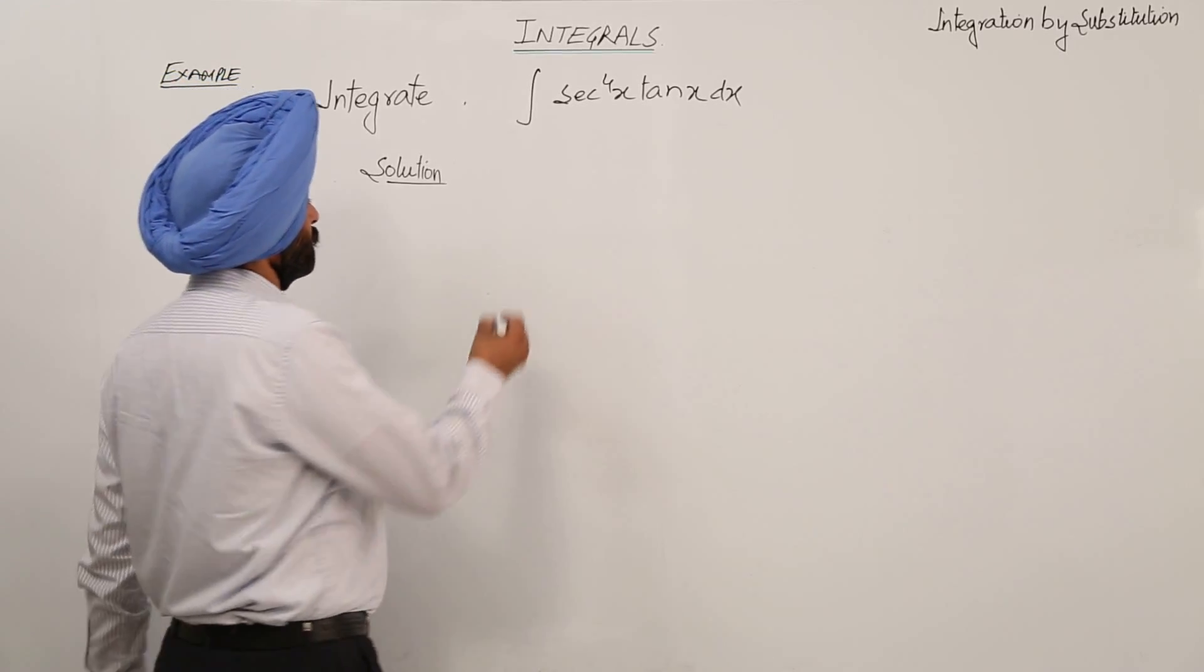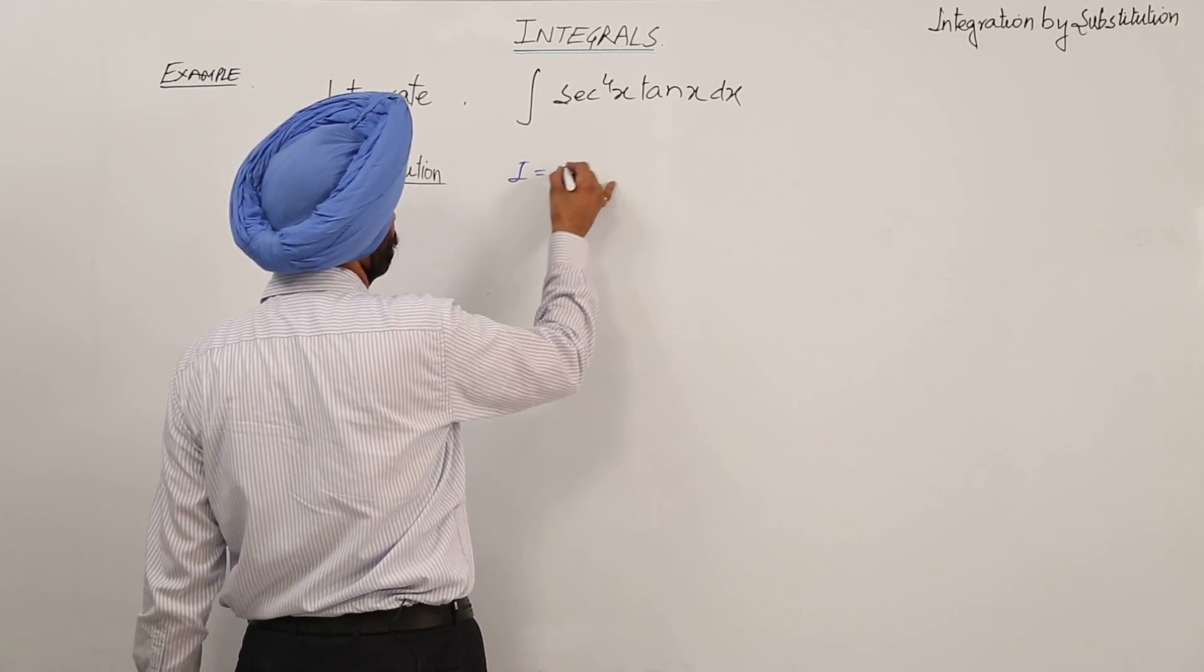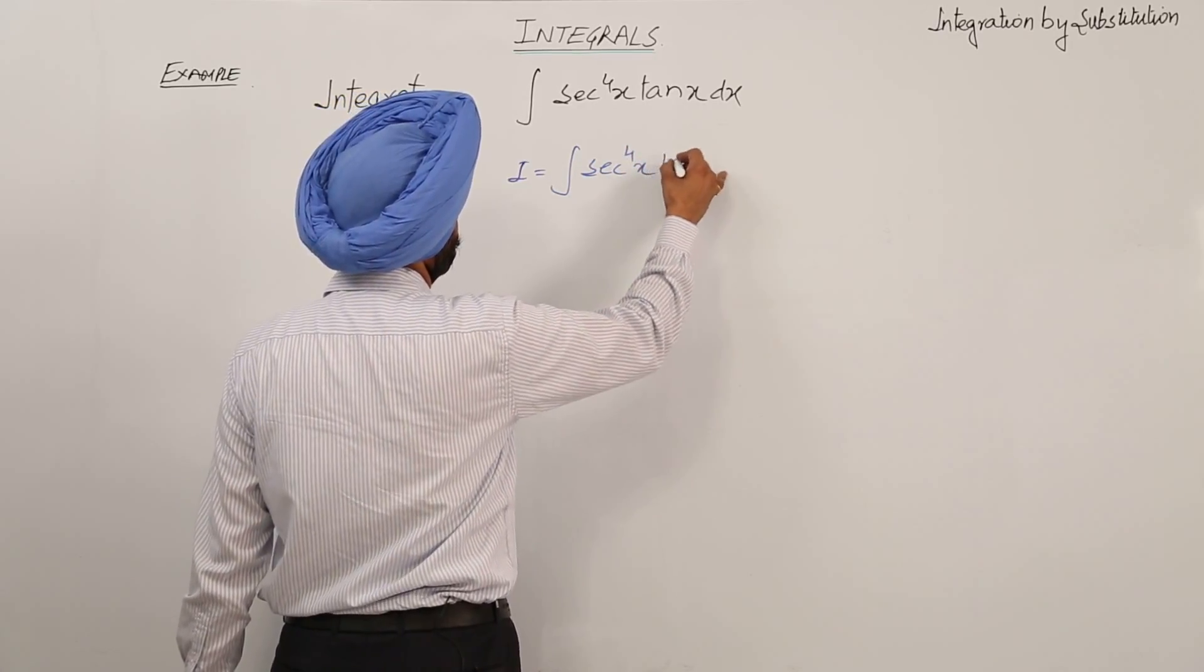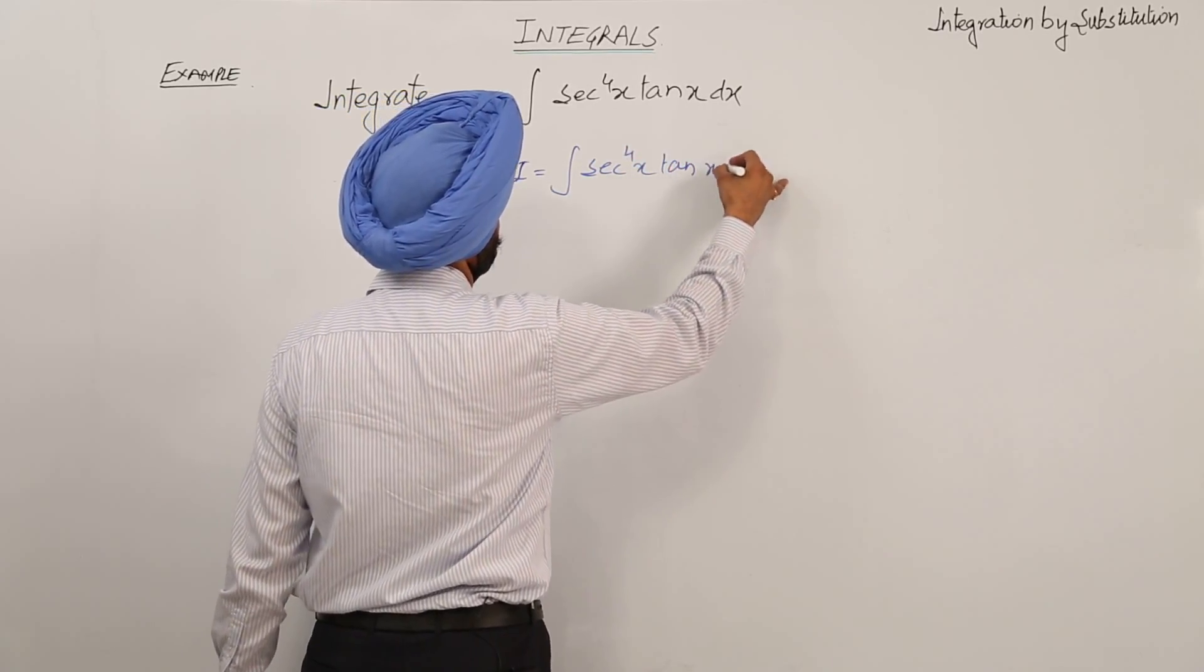The question is, we have to find integration for secant raised to power 4x tan x dx.